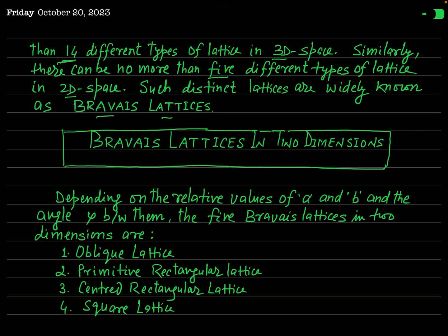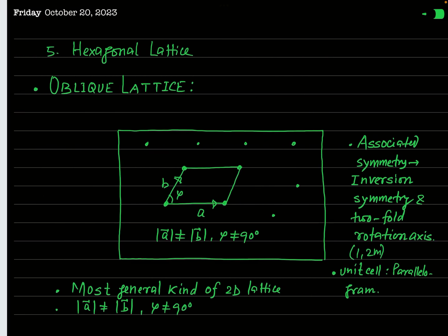In this lecture our aim is only to discuss the Bravais lattices in two dimensions. In the case of two-dimensional lattices, only three parameters are required to characterize them: A, B, and the angle phi between A and B. Depending upon the values of A, B, and phi, Bravais found five types of plane lattices: oblique lattice, primitive rectangular lattice, centered rectangular lattice, square lattice, and hexagonal lattice.